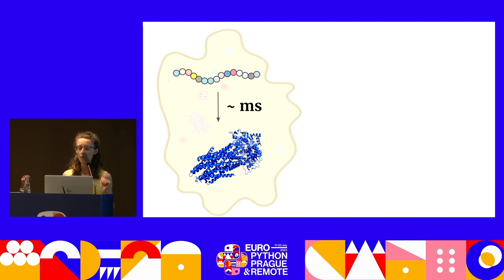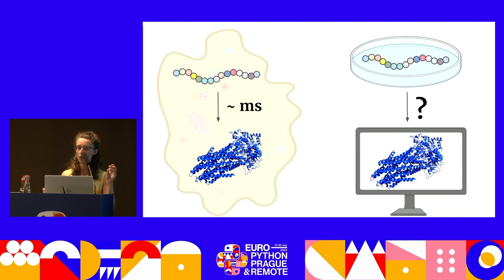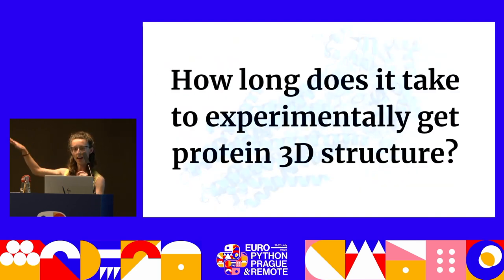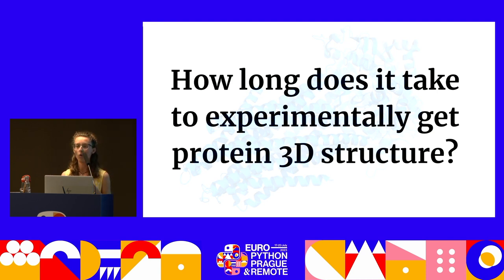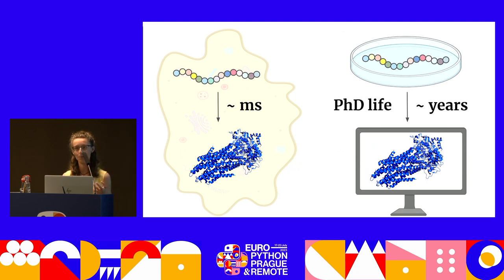Let's have a look at the folding itself. When a protein is in a cell naturally, it can fold into the 3D structure immediately, in milliseconds. But when you're a scientist and you have the amino acid sequence — which is quite easy to get with experiments — how long do you think it will take to get the 3D structure? Because if you know what you're doing and have worked with the protein already, it may take months, but usually it's more like years. There's a joke that every protein in a database took a PhD life.